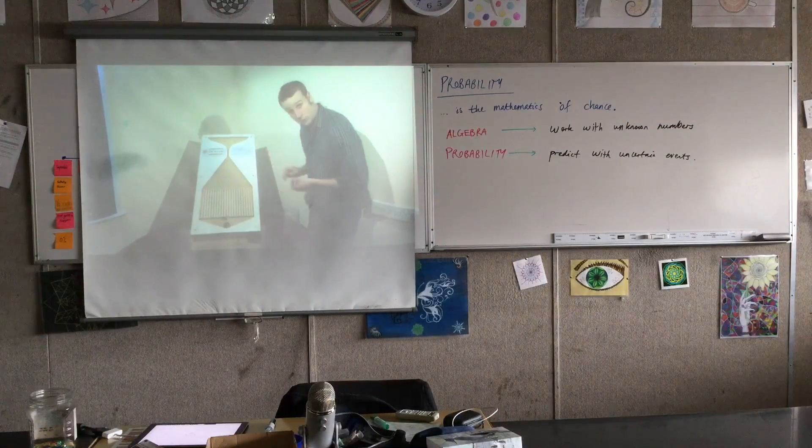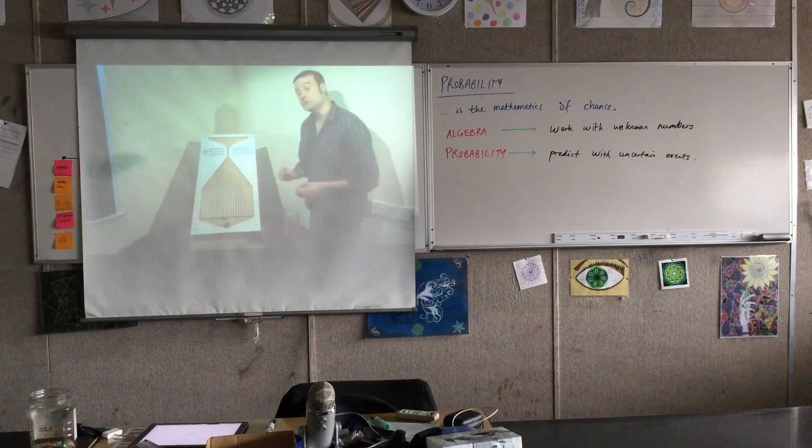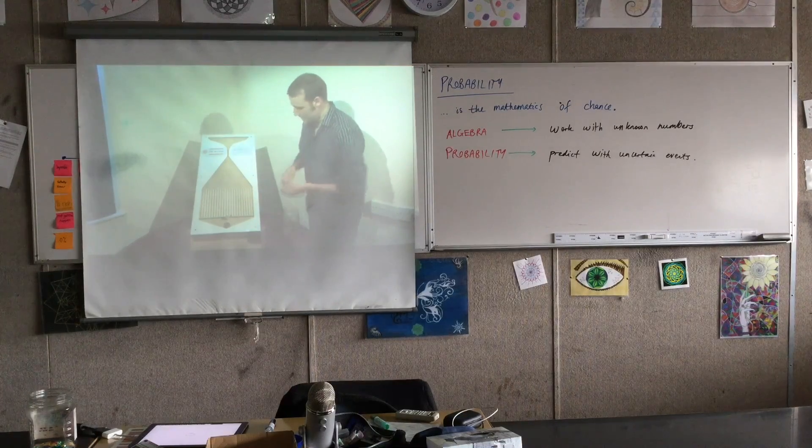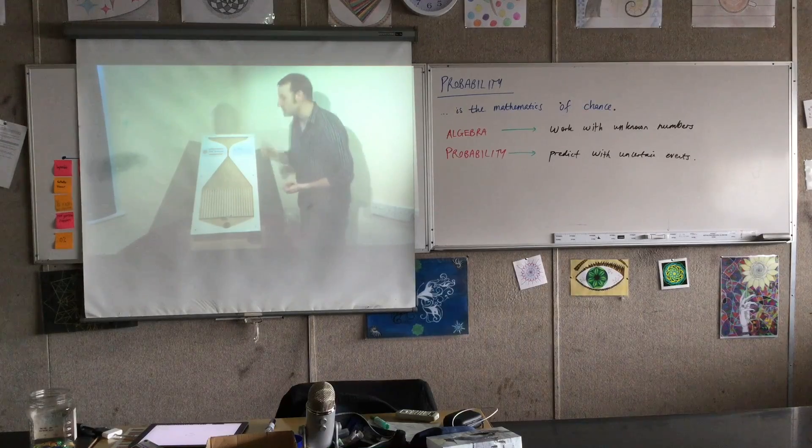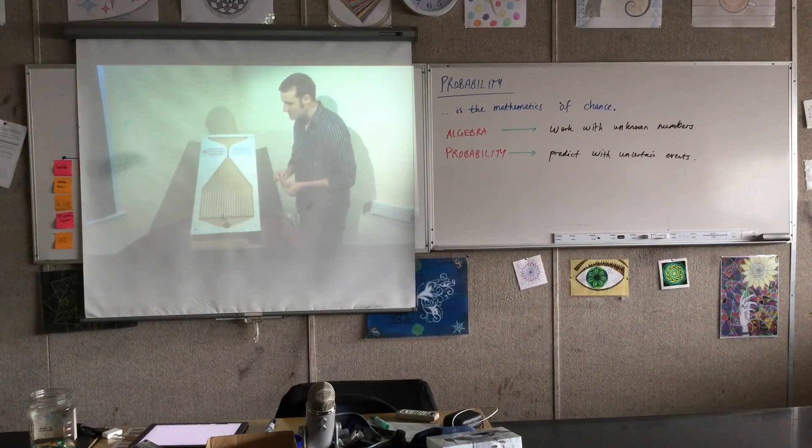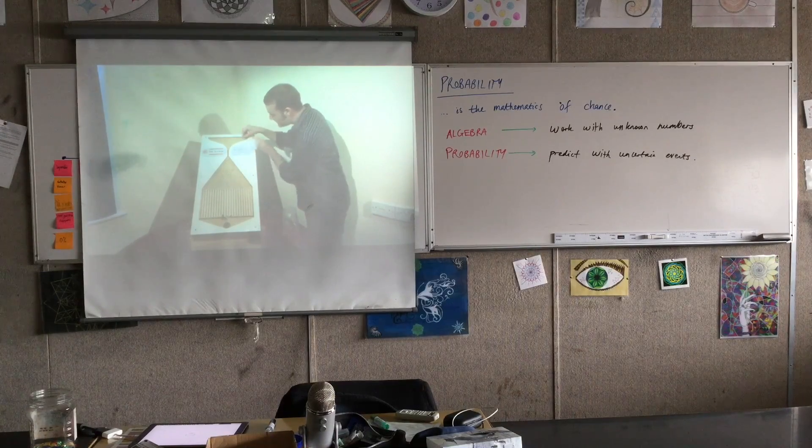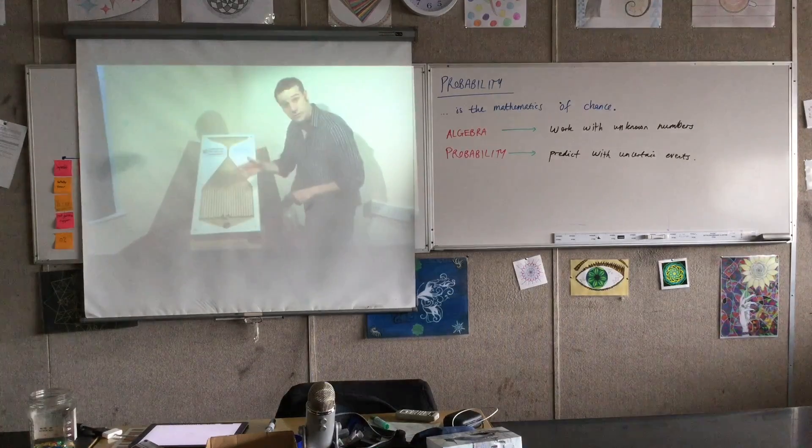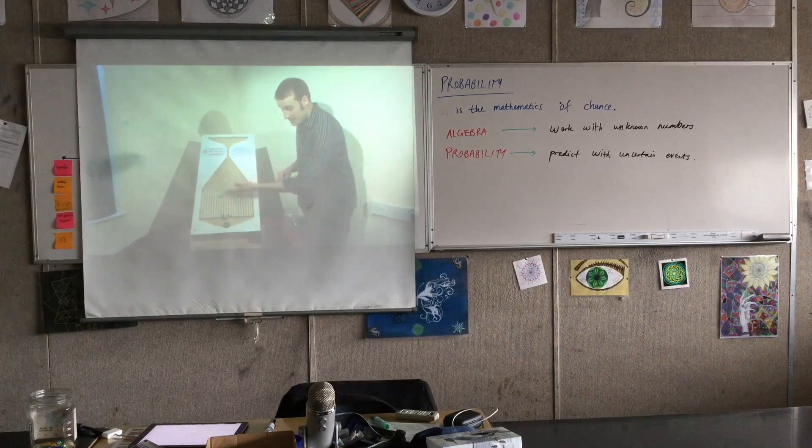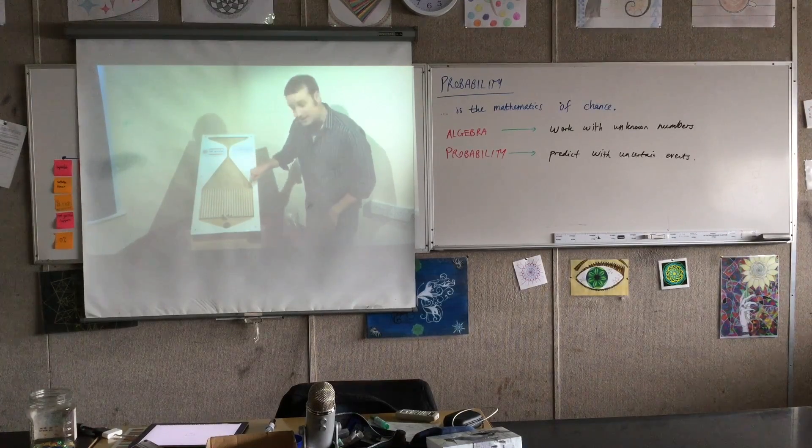Right. So this is a Galton board, because the first person to make one of these and name it after themself was called Galton. And what you do is you take a ball, you drop it into the top and it bounces off all these nails before eventually going into one of these categories. And when the ball hits each nail, in theory, there's a 50-50 chance of it going left or right. And so each path is pretty much unpredictable. If I was to take two balls and put them in, even if I try and put them in exactly the same, they will end up in completely different positions. We cannot accurately predict where any given ball will go. However, we can make a few statements. We can say that a ball is more likely to end up in the middle than the edge because these center categories, there are lots of different paths that end up here. There are only a few paths that end up on the edge.